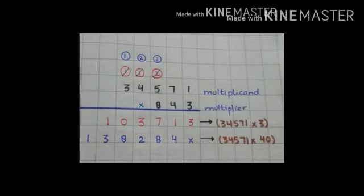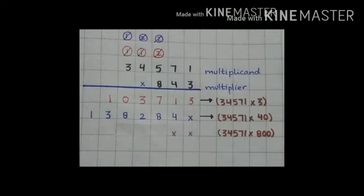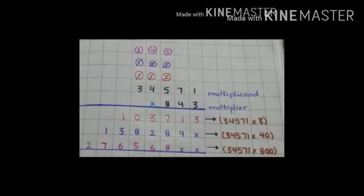Now hum teesre step mein multiplier ke hundreds value mein jo 8 maujud hai, hum usse multiply kareenge. 8 ke right side pe humare paas 2 digits hain, it means hum 00 write kareenge — like 34,571 multiply by 800. Now aap second step ki carry value ko bhi cut kareenge. Teesre step mein once and 10th place pe second step ke neeche 2 cross place kareenge. Multiply: 1 times 8 is 8 — aap 8 write kareenge. Next: 7 times 8 is 56 — 6 ko neeche write kareenge and 5 as a carry write kareenge 100 place pe. Next: 5 times 8 is 40, plus carry 5 is 45 — 5 ko neeche write kareenge and 4 as a carry 1000 place pe.